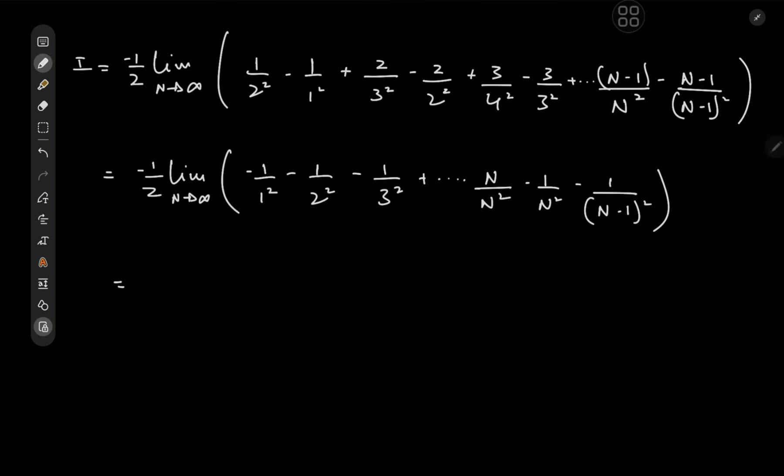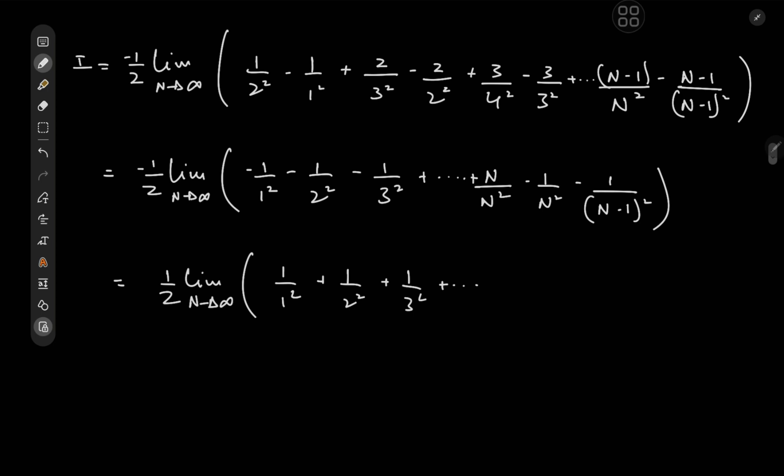So it looks like I can factor out the negative 1. So I have 1 half times the limit as n goes to infinity of 1 over 1 squared plus 1 over 2 squared plus 1 over 3 squared plus all the way up to, okay, what exactly do I have? I factored out a negative sign, so I have 1 over n squared here.